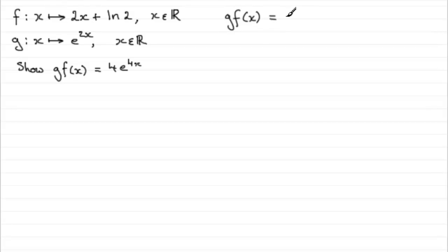And that's going to be g of, okay so put a bracket there, g of whatever f of x is. And f of x is 2x plus the natural log of 2, so just write that in. Now what does this mean? Well, wherever we see an x in the function g, we've got to replace it with 2x plus the natural log of 2.